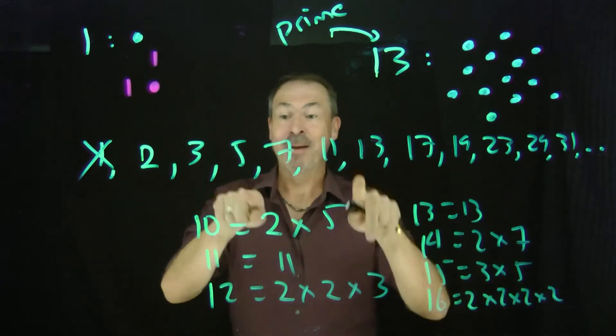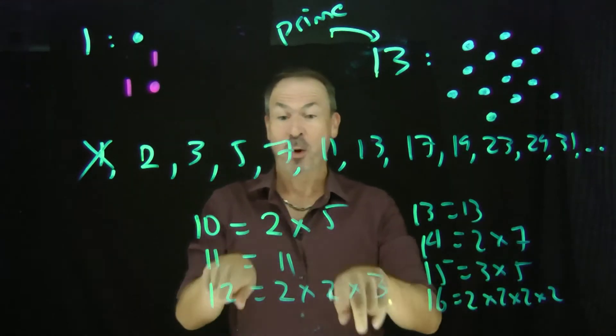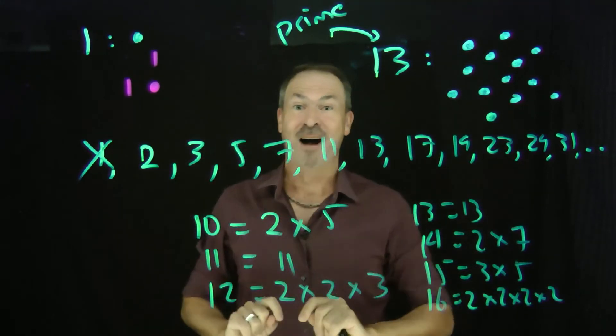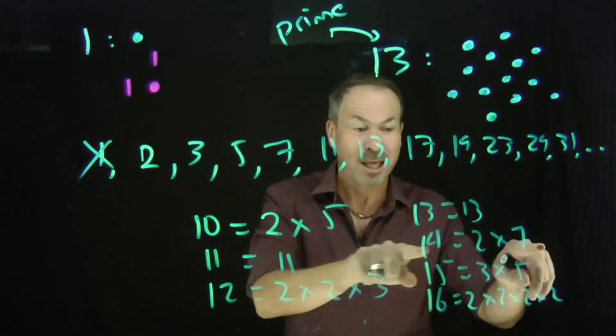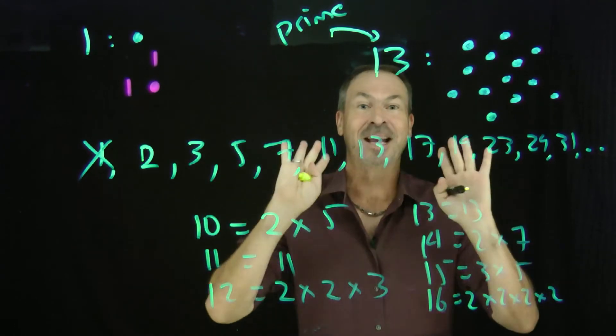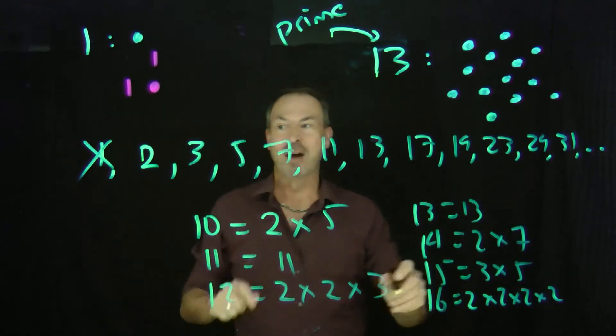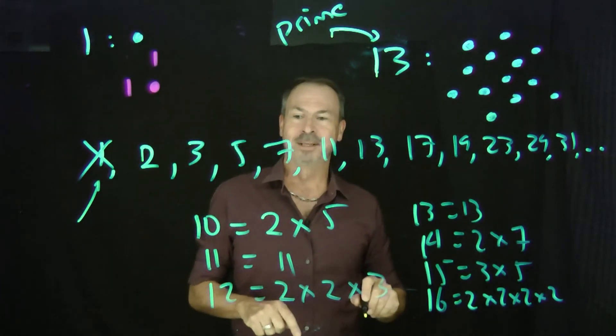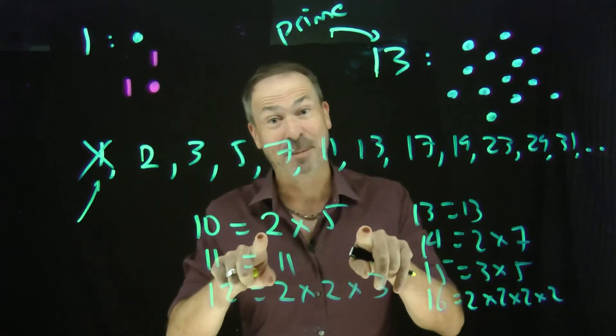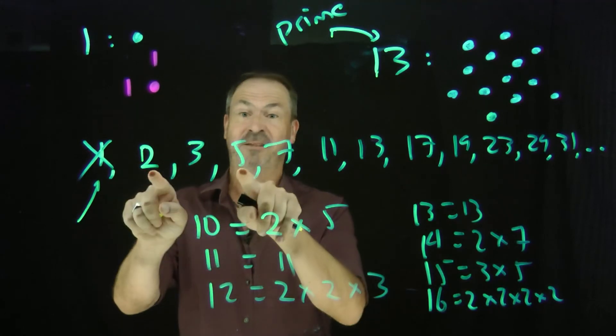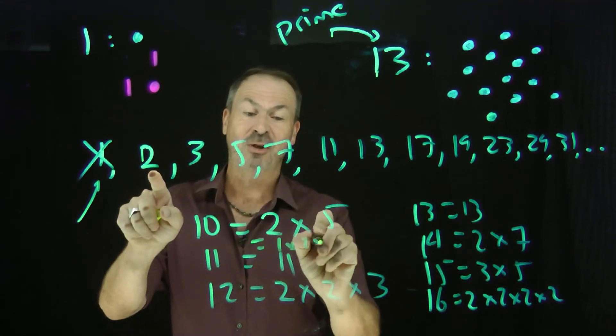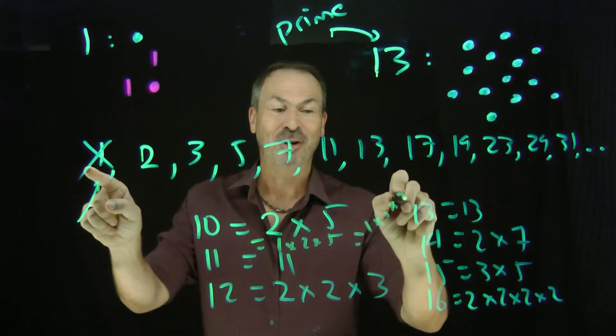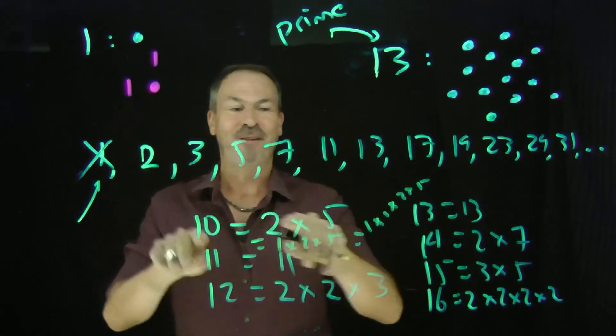And it turns out, every number is built from primes in essentially only one way. You can't build 10 with any other primes other than a single 2 and a single 5. You can't build 14 from any other primes except for a single 2 and a single 7, and so on and so on. However, if I included the number 1 in my list of prime numbers, then there's going to be lots of ways to build 10 all of a sudden. I can think of it as 2 times 5. Of course, there goes 1 times 2 times 5. 1, 2, and 5. I can think of it as 1 times 1 times 2 times 5. 1, 1, 2, 5.